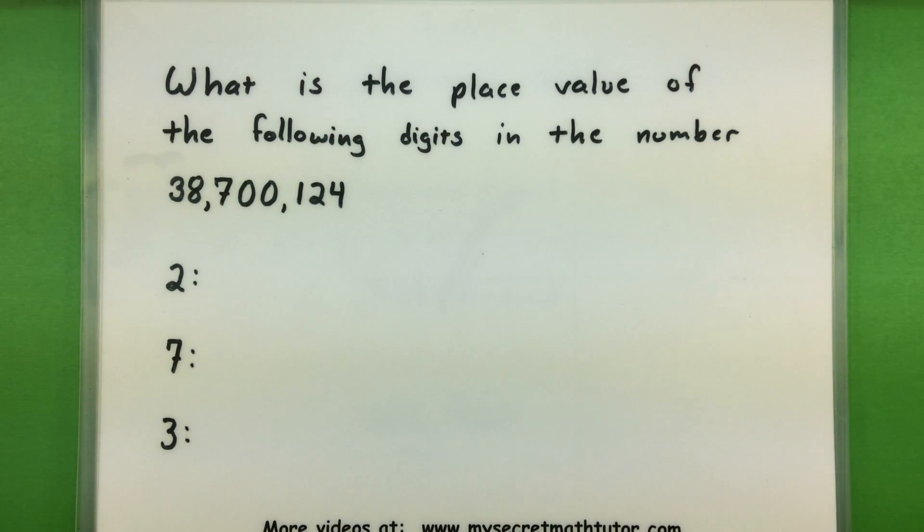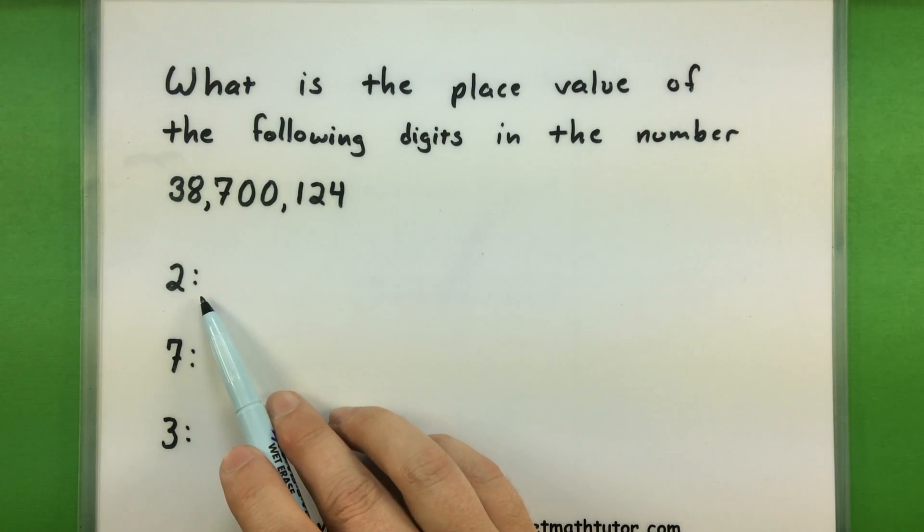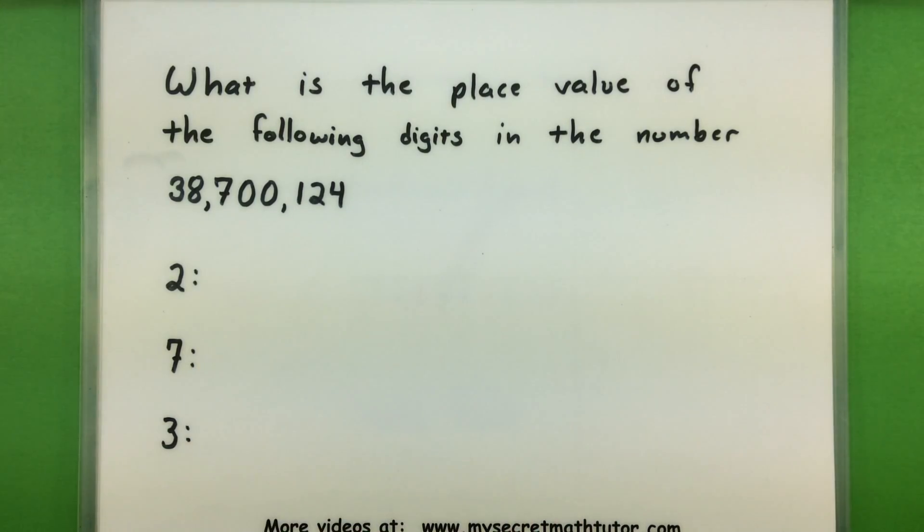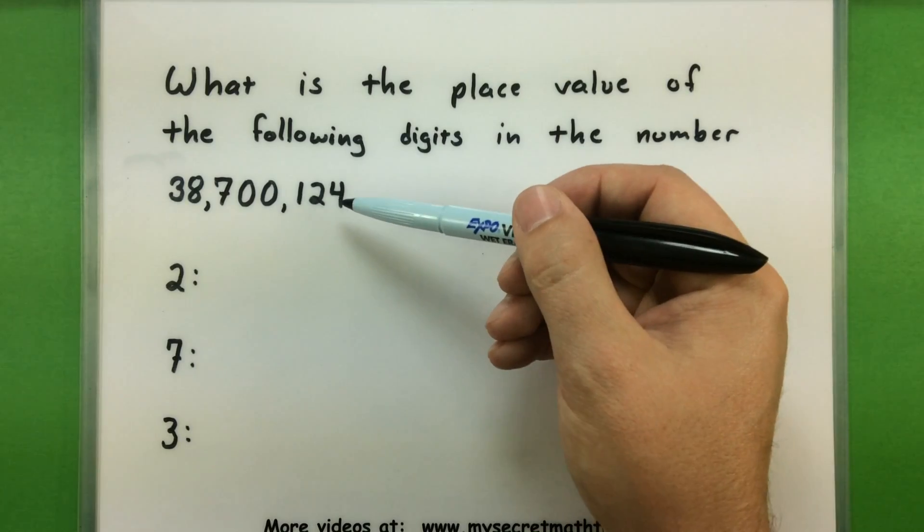For this one, we're going to identify the place value of specific numbers in the number 38,700,124. Specifically, I want to know what place is the 2 in, the 7 in, and then the 3. We'll look at this number, but we really think of looking at it from right to left.